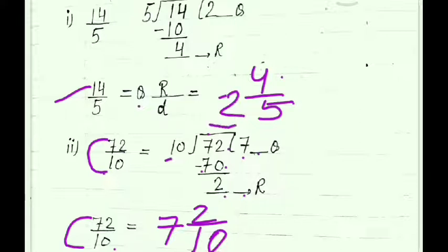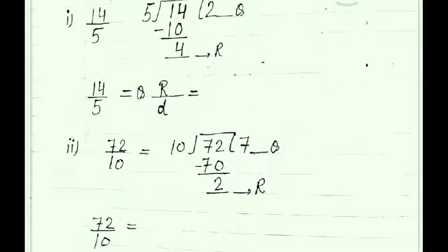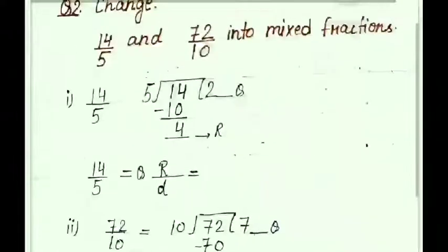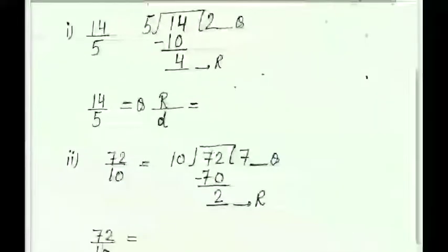Here 2 is the integral part and 4 upon 5 is the fractional part. And for 72 upon 10, 7 is the integral part and 2 upon 10 is the fractional part. Now next — question number 2 B part.